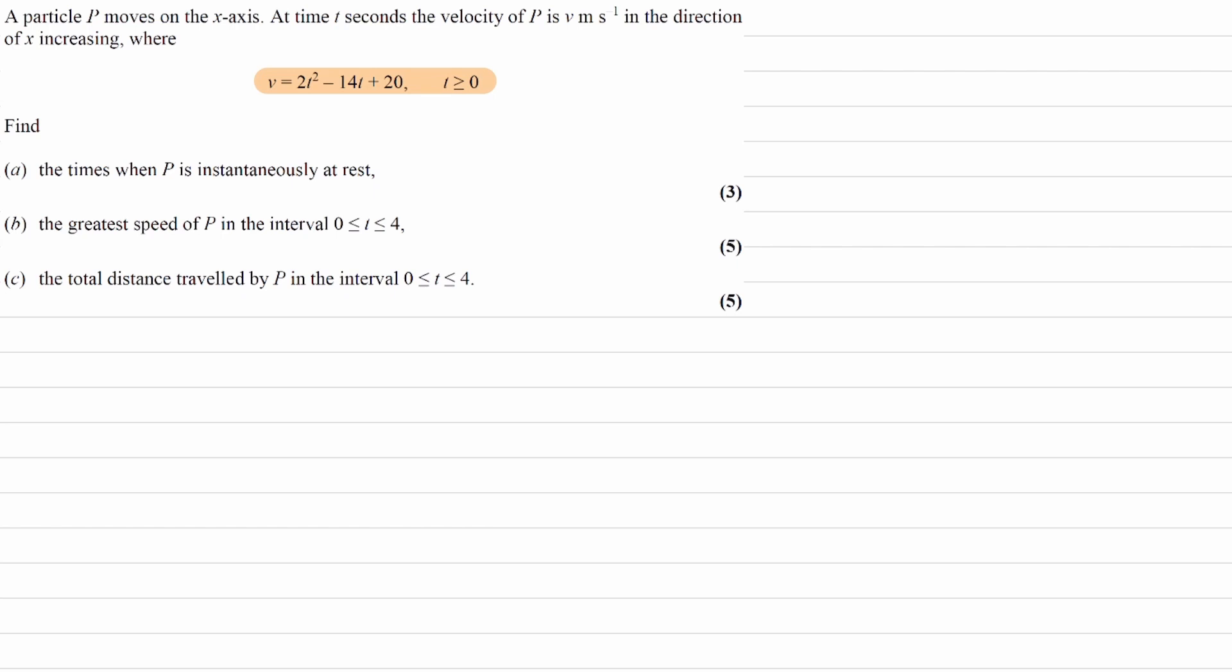We're trying to find the times when P is instantaneously at rest. So for part A, when v equals 0. That's quite straightforward. We just set 2t² - 14t + 20 equal to 0. You could put this in your calculator, or you can factorize. If you factorize, you'd get (t - 2)(t - 5). And then your two answers would be t = 2 and t = 5.